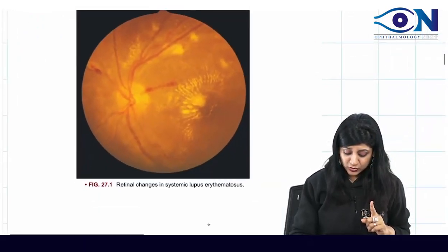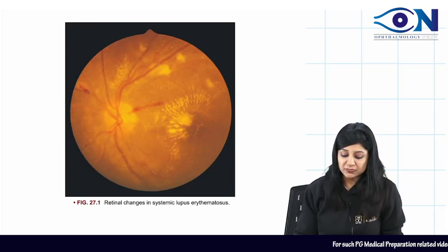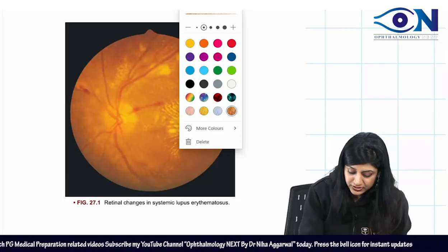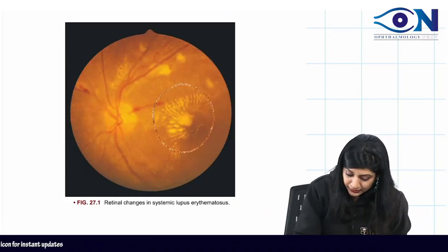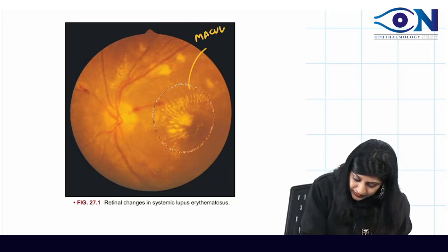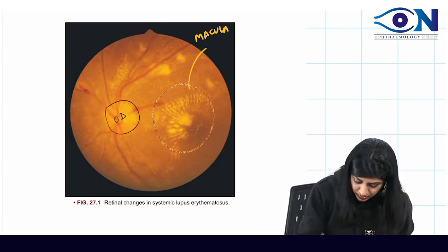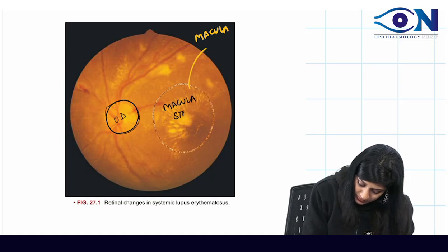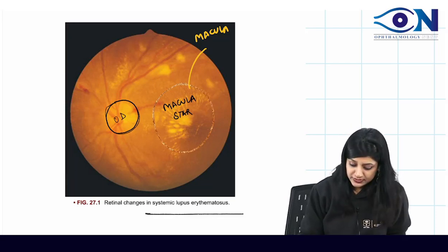Do not skip these images — they are very important. In the first image, you can see retinal changes in systemic lupus erythematosus: macular star formation. The macula is identified because you can see the optic disc nearby; in the macular area, you see the macular star formation found in hypertensive retinopathy. The second image shows extensive neovascularization — whenever you see this, remember it is a case of Takayasu arteritis.